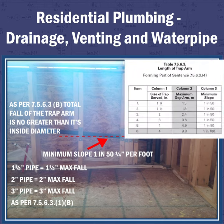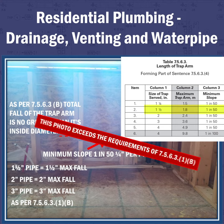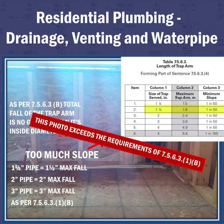Table 7563 tells us that an inch and a half trap can have a maximum trap arm of 1.8 metres and a minimum slope of 1 in 50, also known as a quarter inch per foot.